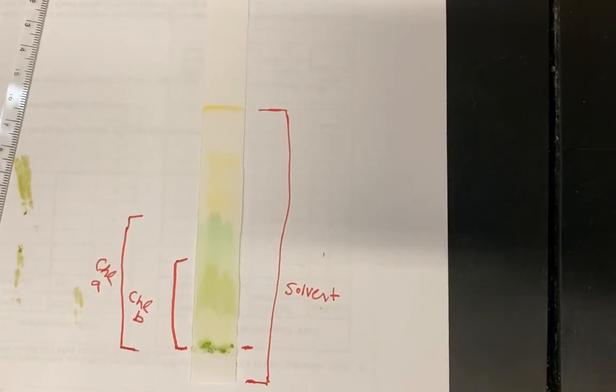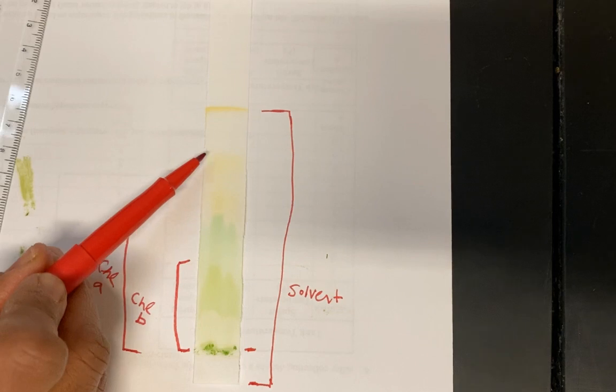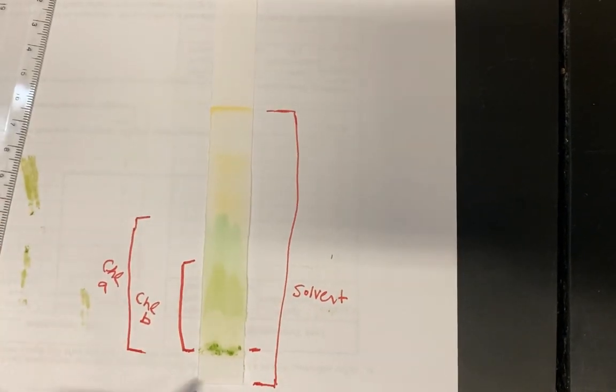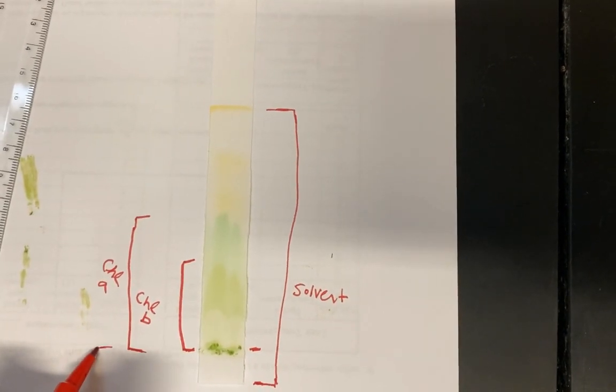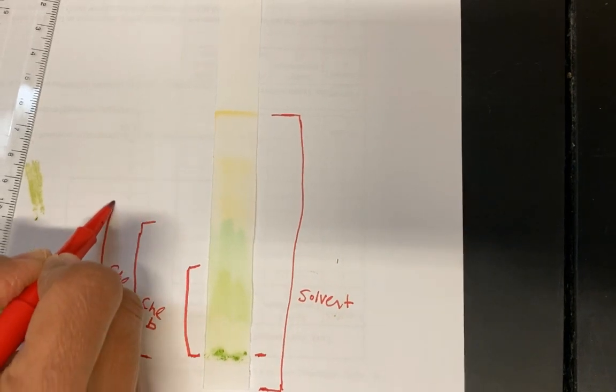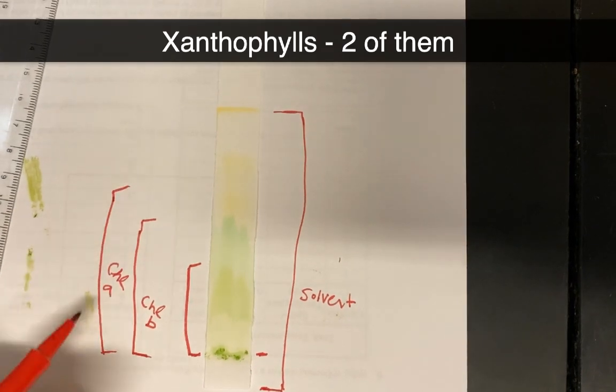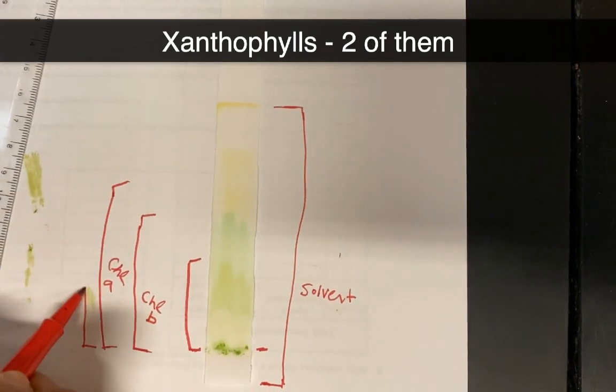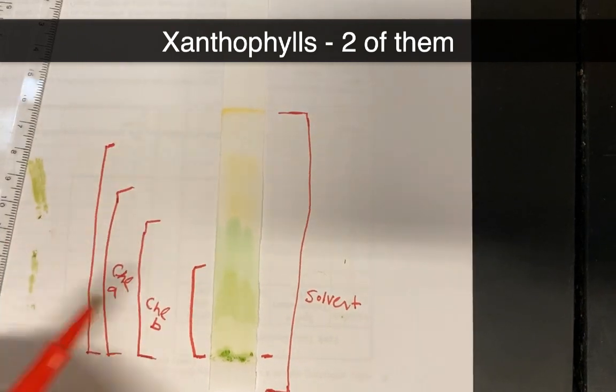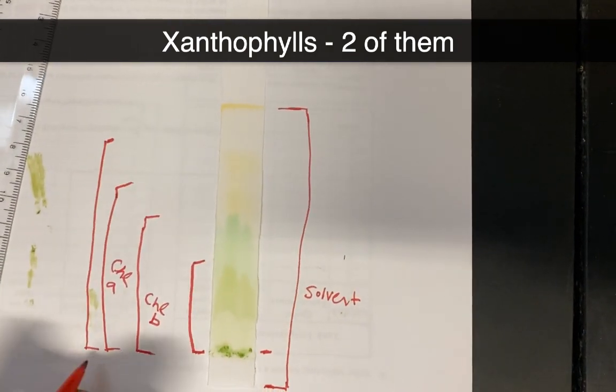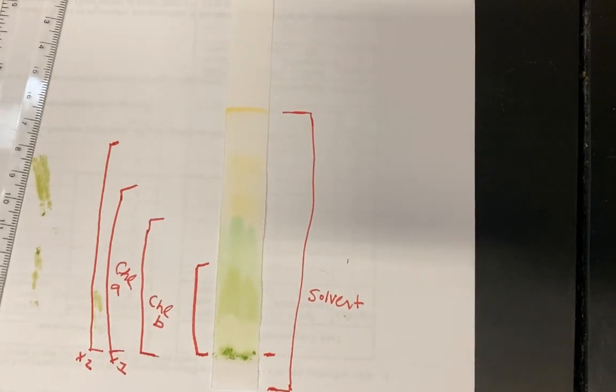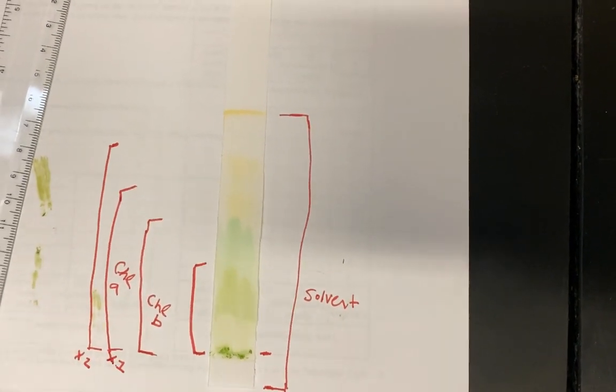All right. Then there's these two yellow bands. These are the xanthophylls. So my xanthophylls are going to travel up. One kind of hard to see the separation. I think maybe it's over here somewhere. That's one of them. And that's maybe about where the other one is. So this is xanthophyll 1 and xanthophyll 2. It doesn't matter which one's 1 and which one's 2, but we'll just label it that way.